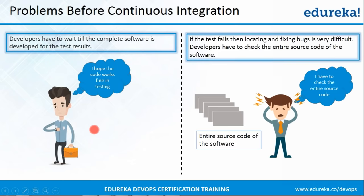But let us look at the flaws that were there in this process one by one. So this is the first problem: as you can see, there is a developer who is waiting for a long time in order to get the test results. As first the entire source code of the application will be built, and then only it will be deployed onto the test server for testing — it takes a lot of time. So developers have to wait for a long time in order to get the test results.